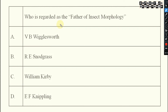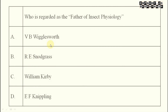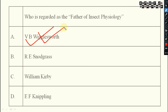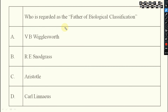Next: who is regarded as the father of insect morphology? That is Snodgrass — he is regarded as the father of insect morphology. Next: who is regarded as the father of insect physiology? That is B.B. Wigglesworth — he is known as the father of insect physiology.